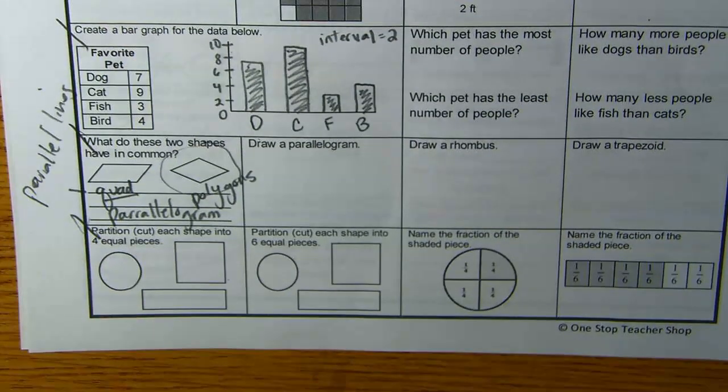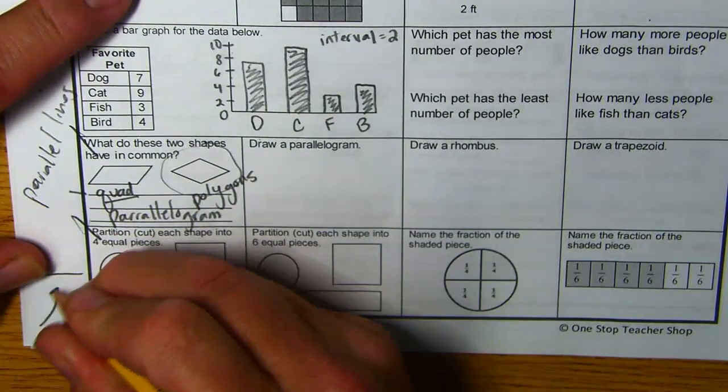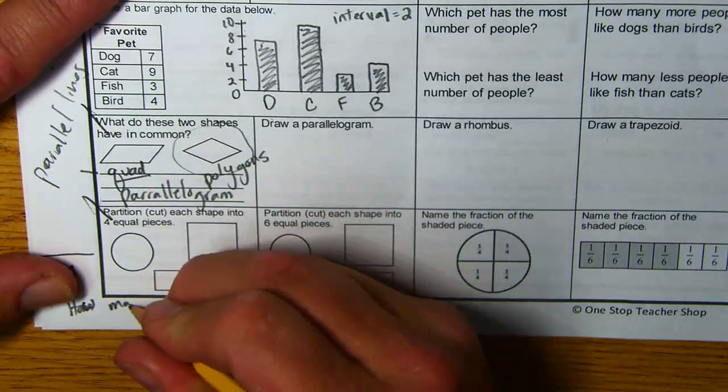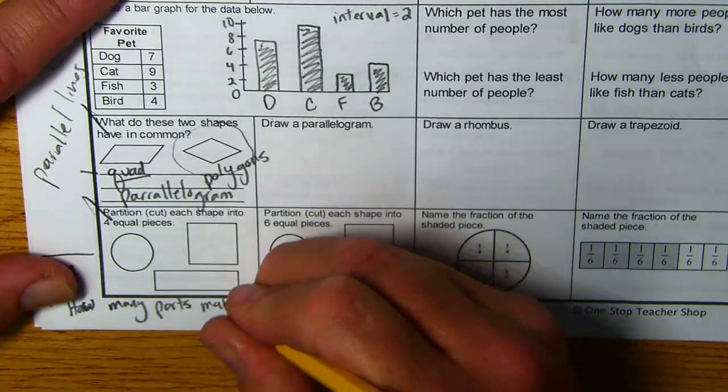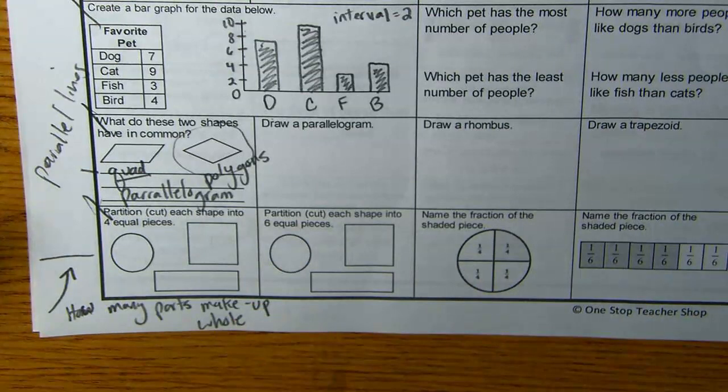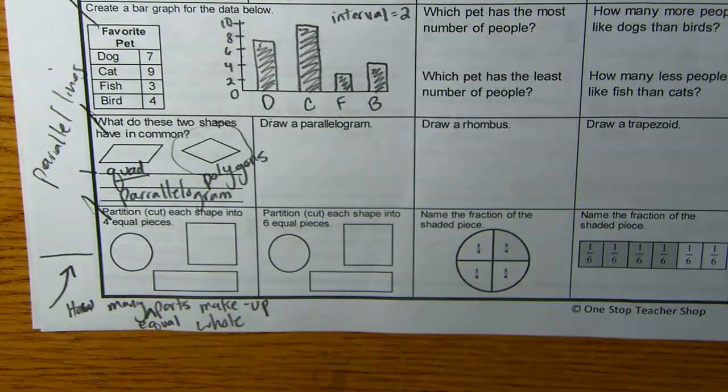Okay. We're going to get into fractions here. So I need to cut each of these holes into four. The bottom number in a fraction, you might want to write this down. How many parts make up whole? The bottom number in a fraction tells you how many, this is crucial, equal parts. That's a crucial part of what it means to be a fraction. You have to cut up the shape so that each piece is the exact same size. How many equal parts make up a whole.